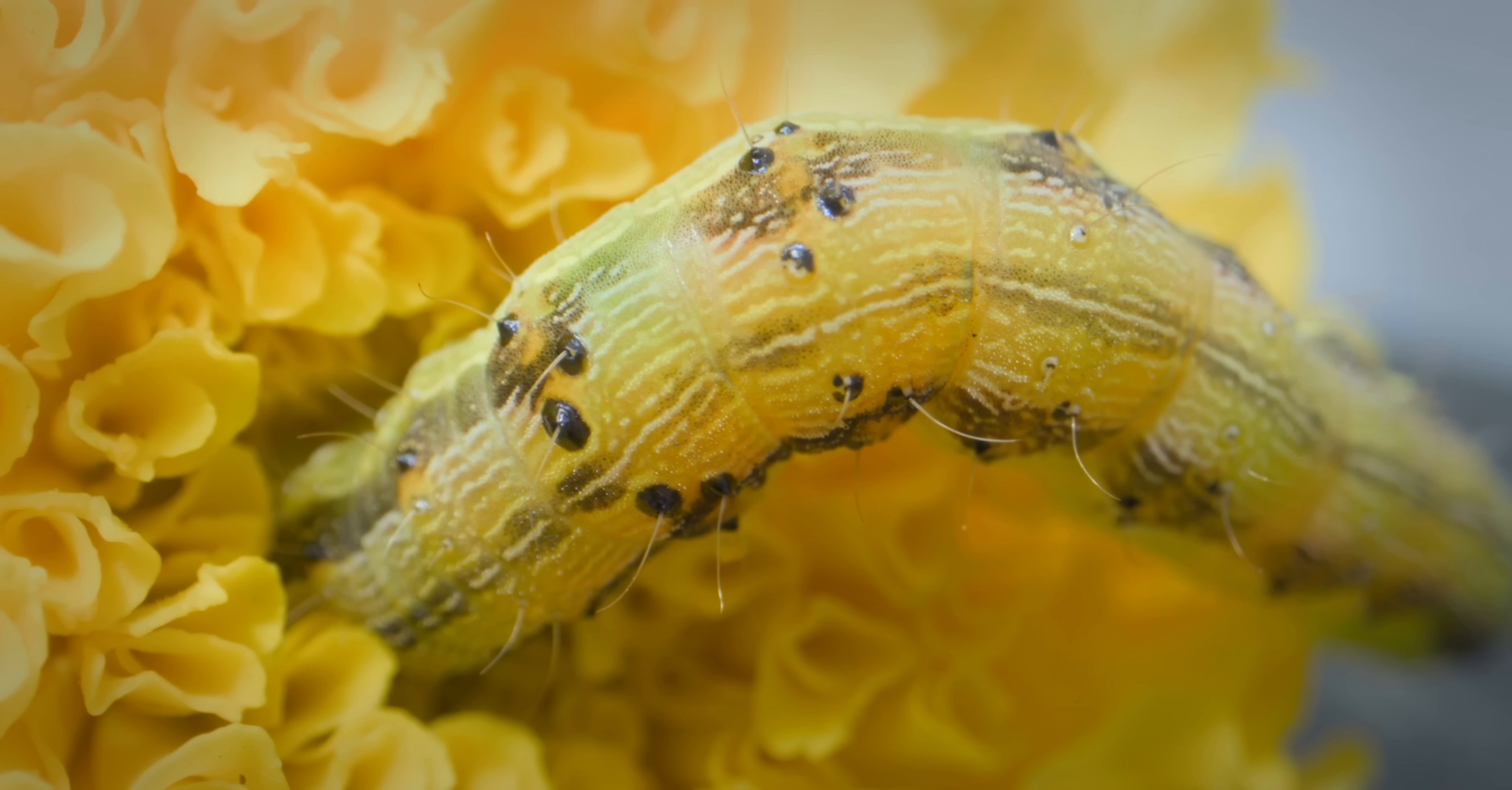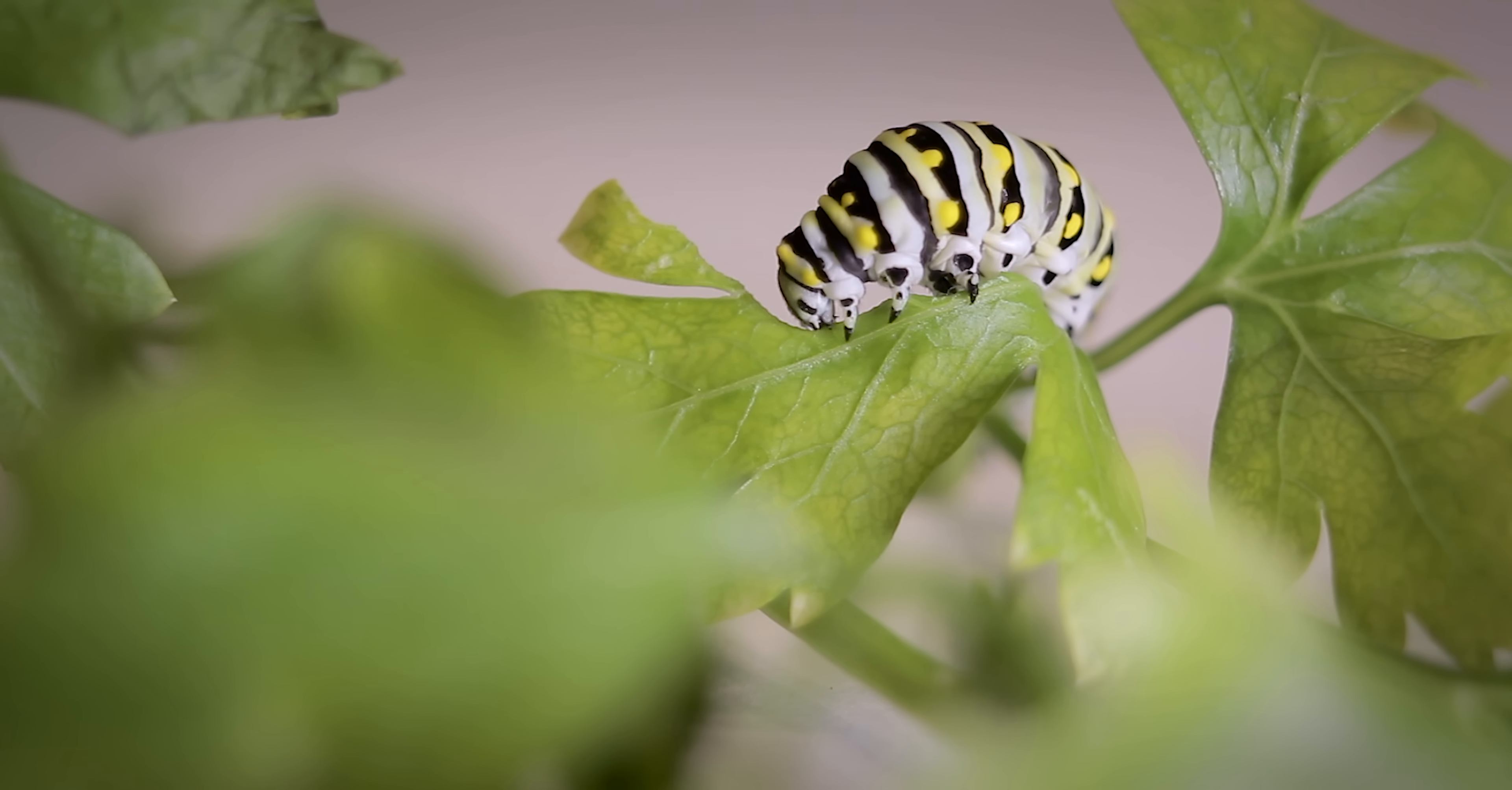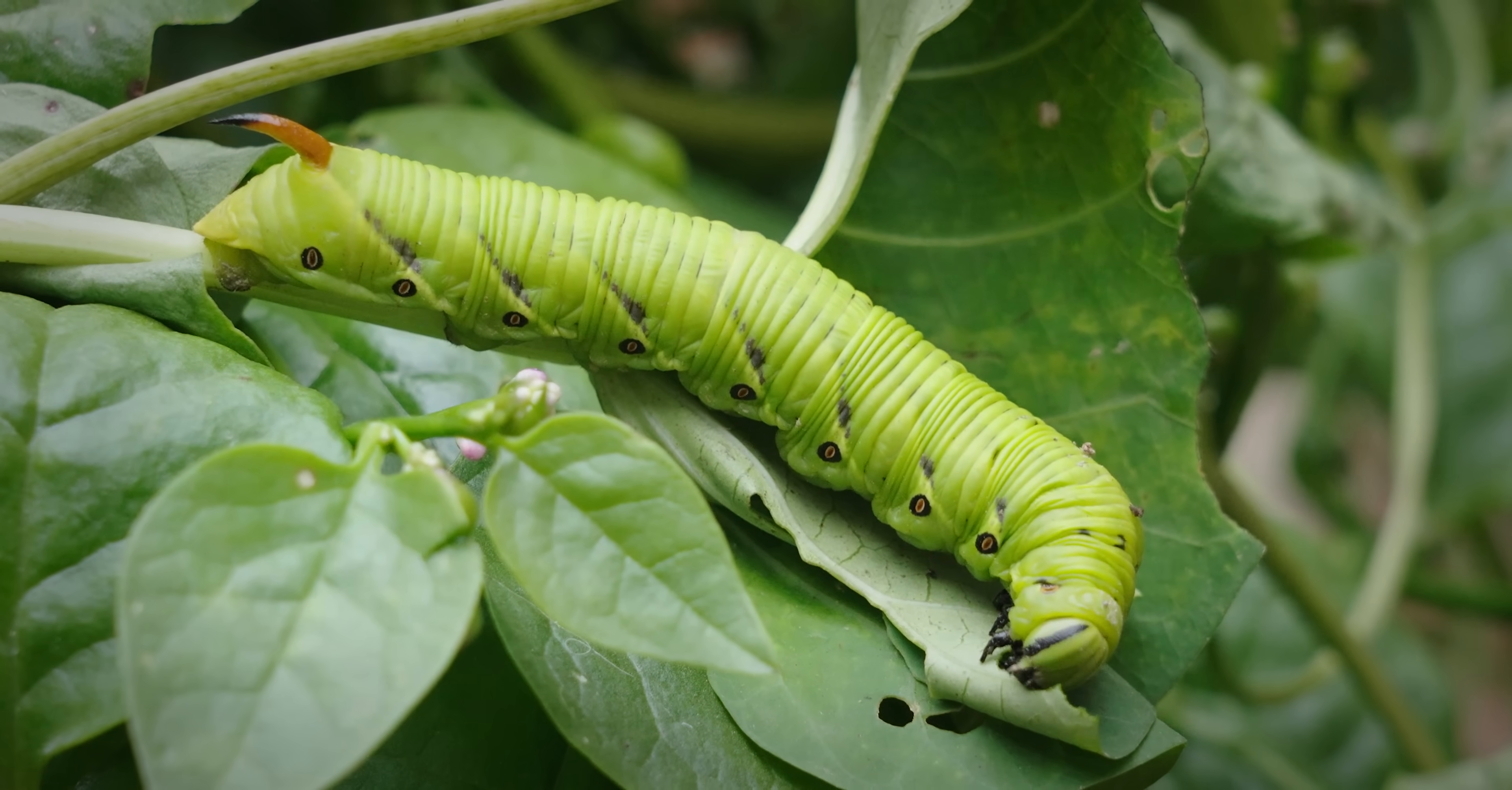From the moment they hatch, caterpillars don't just grow. They explode in size, packing on up to 10,000 times their original weight before transforming. Their early life is like one long, unstoppable bulk phase. No cutting season, just pure gains. And there are a select few who are trying to take their bulk to the next level, rebelling against their leafy fate, swapping salad for straight up meat in a full blown slasher flick twist.